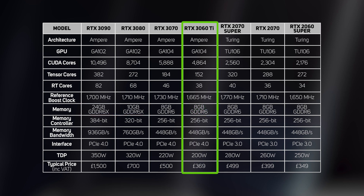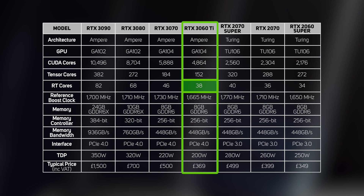The GA104 implementation in the RTX 3060 Ti has 4,864 CUDA cores, 152 Tensor cores, 38 RT cores, and 8GB of memory.